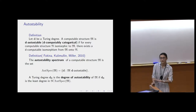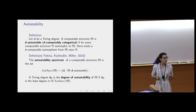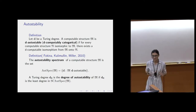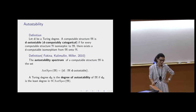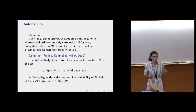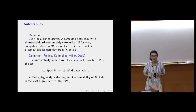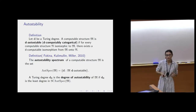One direction of computable structure theory is the research of complexity of the isomorphism between two copies of structures. One class of interesting objects is structures that we can say are stable—meaning that when we consider two computable copies, there exists a computable isomorphism between them. We may also talk about D-stable structures if we want to find a D-computable isomorphism. When talking about computable copies of computable structures, this is called auto-stability.